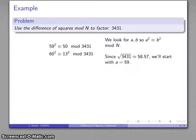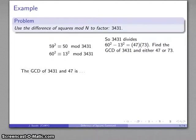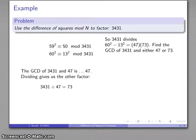And that tells me that 3431 divides the difference, 60 squared minus 13 squared, which is 47 times 73. So, that tells me, then, that the greatest common divisor, 3431, and either one of these two is going to also be a factor of 3431. And we find that the greatest common divisor is 47, and through division, we can get the other factor, 73. And so, that gives us our factorization, 3431 is 47 times 73.